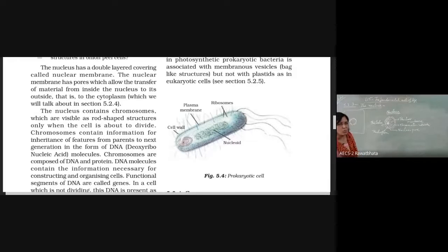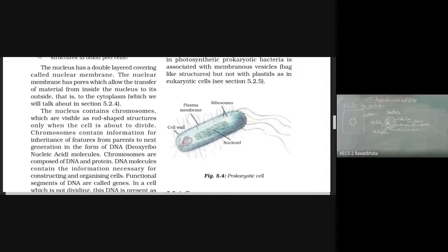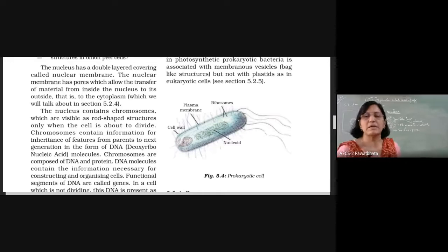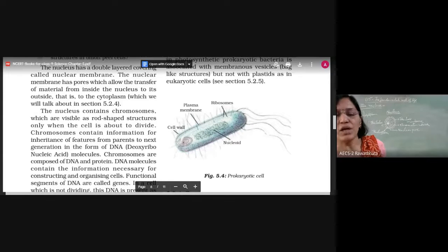The cell's cytoplasm is the jelly-like substance inside the cell membrane, present outside the nucleus and inside the cell membrane, wherein all cell organelles live. In the same way, inside the nucleus, the liquid present is called nucleoplasm. So if an entity has all these structures, we call it a proper nucleus.